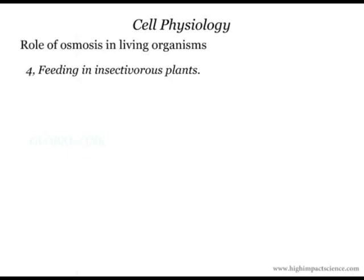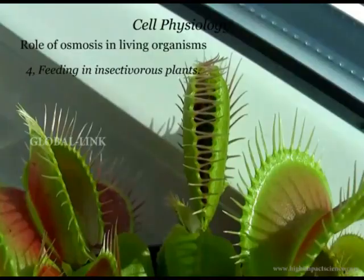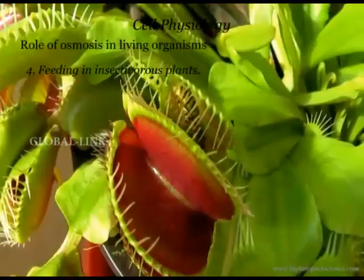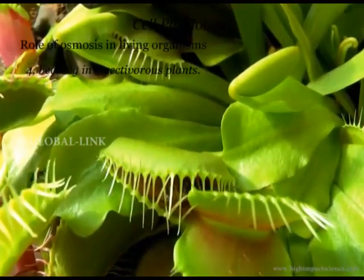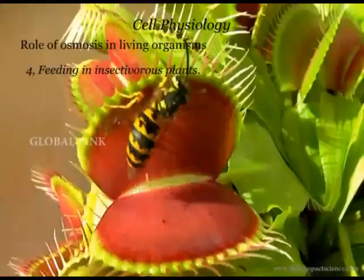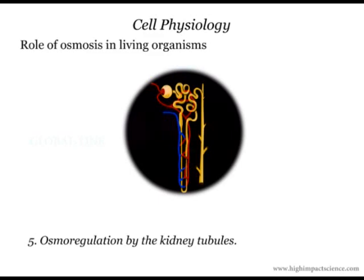Feeding in insectivorous plants. These are plants that trap insects using special structures that suddenly change their turgor pressure when disturbed. The change in turgor pressure enables the special structures to close, trapping insects which are digested to provide amino acids. Osmoregulation: in kidney tubules of animals, water is withdrawn from the tubules through the tubular walls by osmosis. Water finds its way into the surrounding blood capillaries, helping the animal to regulate its body osmotic pressure.